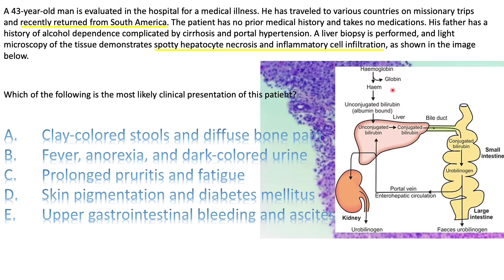When there is a rise in unconjugated bilirubin, you won't see dark urine or pale stool — you'll just see jaundice and probably kernicterus later on. So what is the most likely clinical presentation? This patient has an infection, so he must have fever, anorexia, and dark colored urine because of conjugated hyperbilirubinemia. The correct answer is B.